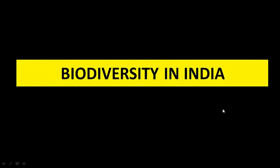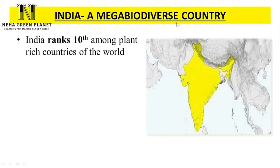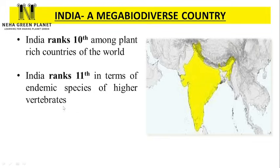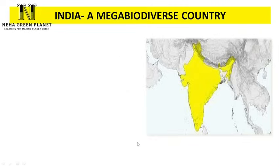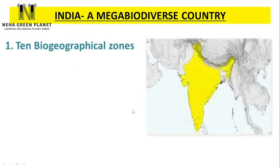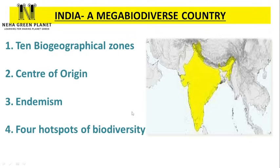India is considered a mega biodiverse country with extremely rich biodiversity. It holds the rank of 10th among plant-rich countries of the world, is ranked 11th in terms of endemic species of higher vertebrates, and is at rank 6th among centers of diversity and origin of agricultural crops. The reasons why India is so rich in biodiversity include: 10 bio-geographical zones, being a center of origin for many plants, having many endemic species, and having four hotspots of biodiversity.